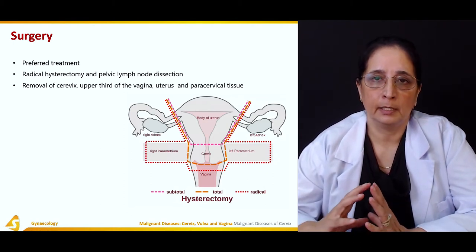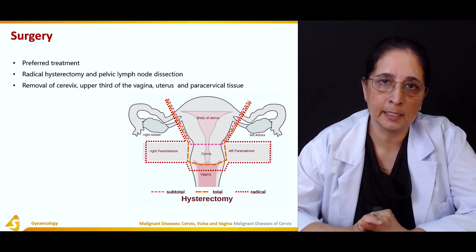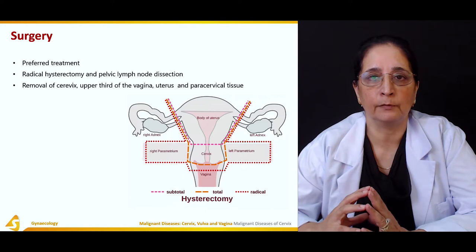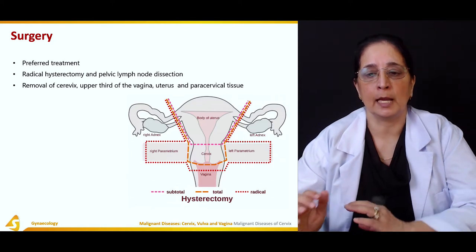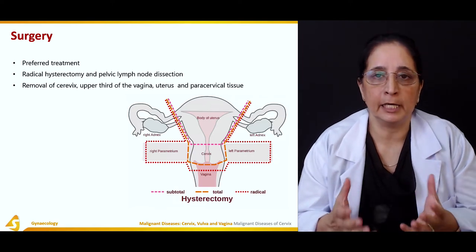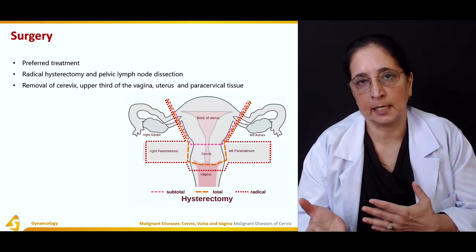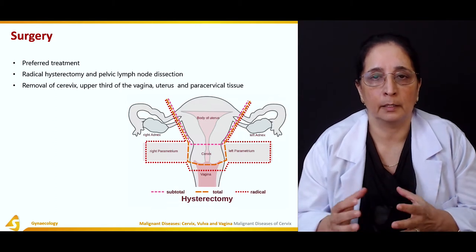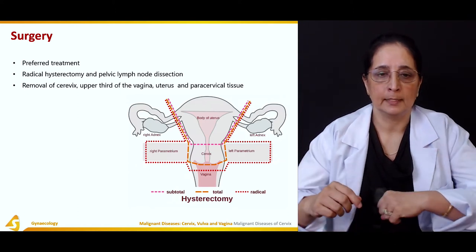Surgery is the preferred treatment. The types of surgery performed include trachelectomy, removal of the upper part of the vagina, uterus, and paracervical tissues. Depending on the age and staging of the cancer — if it is extensive and has already invaded or spread — we must proceed more aggressively to save the patient.